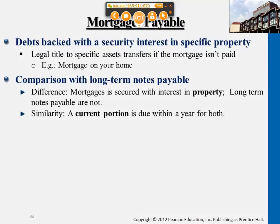Mortgages payable is another type of long-term liability. The difference is that this type of liability typically happens if a company wants to purchase long-term assets, specifically property-type assets — land and building.